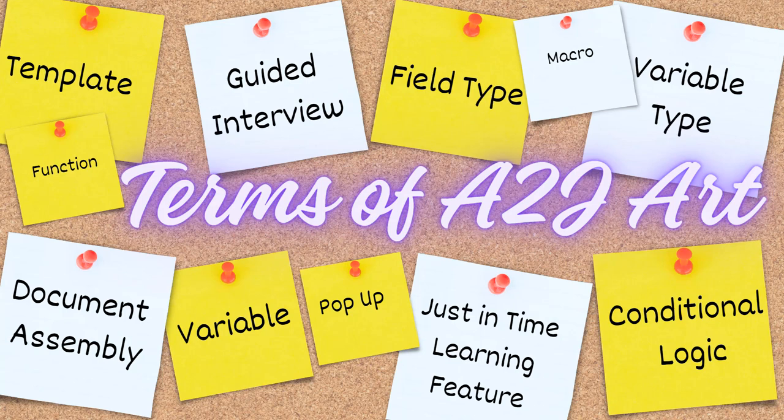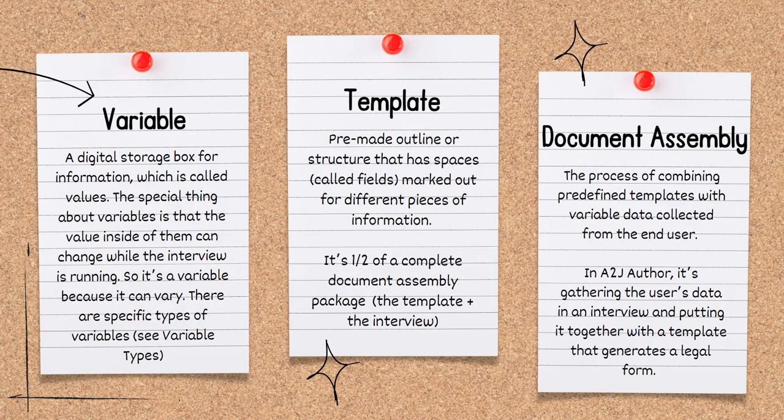Critically examine all of the words that you're using and grade them against what a pro se litigant unfamiliar with a legal process is likely to know. This will give you a decent starting point to use when building out your pop-ups and learn mores. Let's talk about a variable. A variable is a digital storage box for information, which is called values. The special thing about variables is that the value inside of them can change while the interview is running. So it's a variable because it can vary.